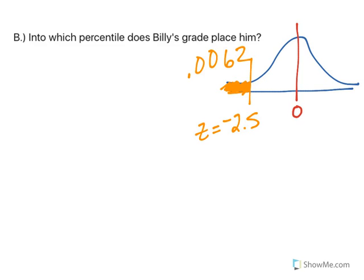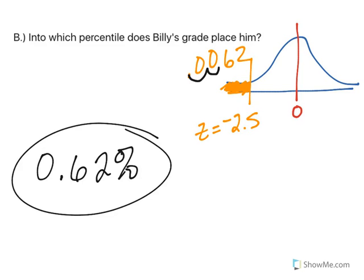So that means, as a percentile, I multiply by 100. Billy's percentile is 0.62%, which means if you talk about a meaningful sentence with that, Billy scored better than 0.62% of students.